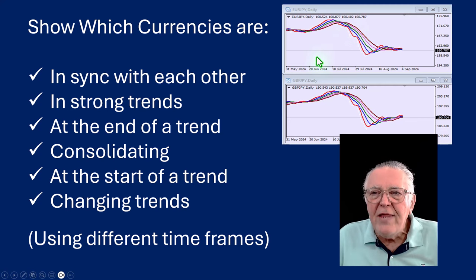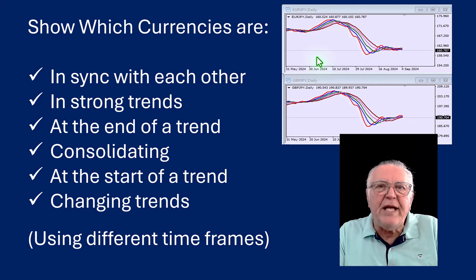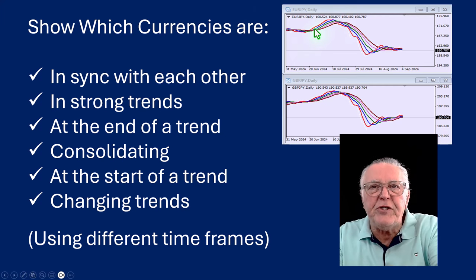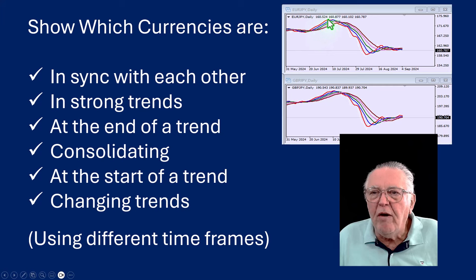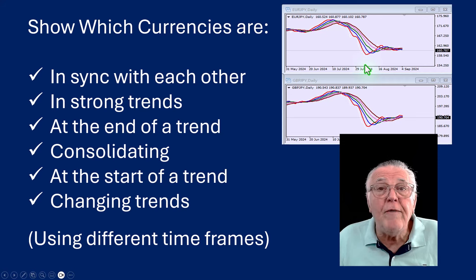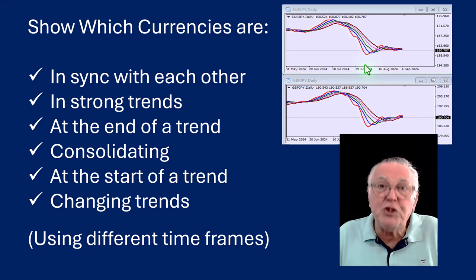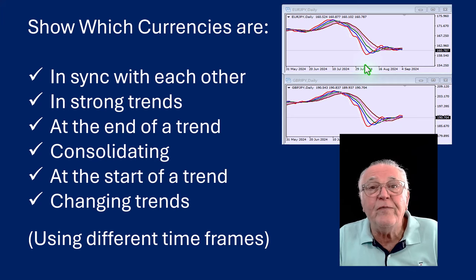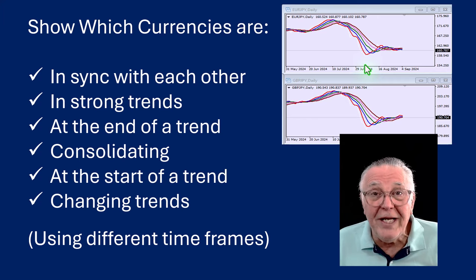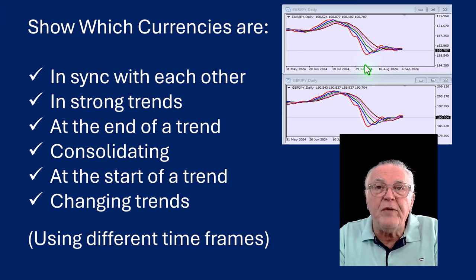Secondly, you can see strong trends. What do strong trends look like? They are trends where the moving averages part — they trade away from each other, creating a big difference between the moving averages, and they are all flaring in the direction of the trend. The further apart they are, the stronger the trend. This is a way of finding trending markets, and when you find trending markets you don't trade against the trend.